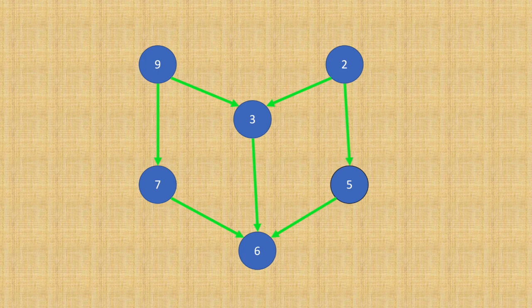So here if you carefully observe, there need not be a unique sorting order. Actually, we can get quite a few sorted orders which will be correct. For example, here node 9 and 2 can come in any order since they don't have prior dependencies. Similarly, the next set of nodes, such as 7 and 5, which are dependent on 9 and 2 respectively, can come in any order once 9 and 2 have been visited.